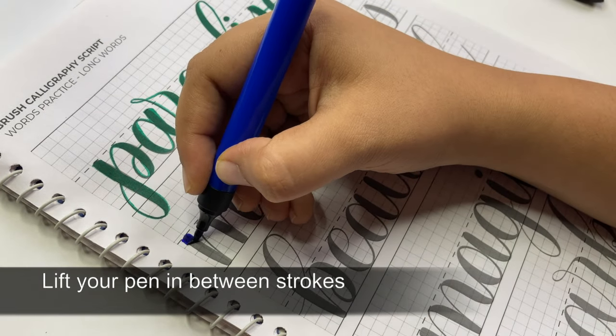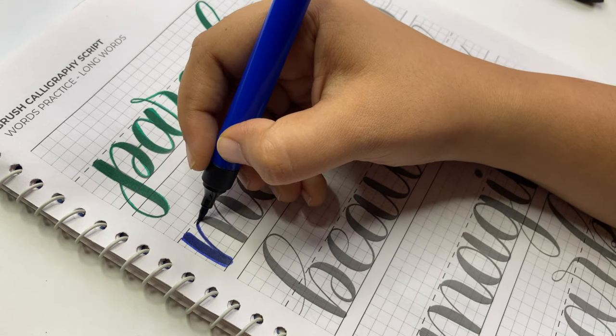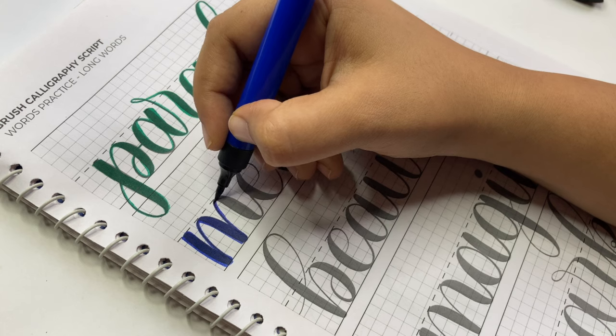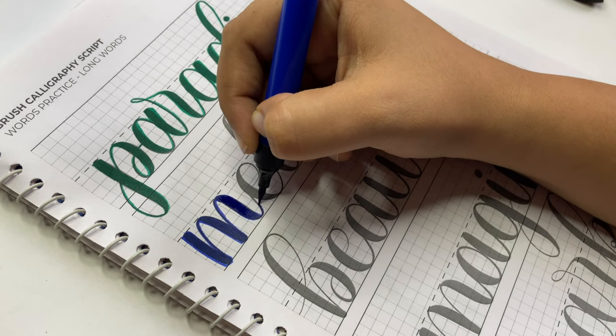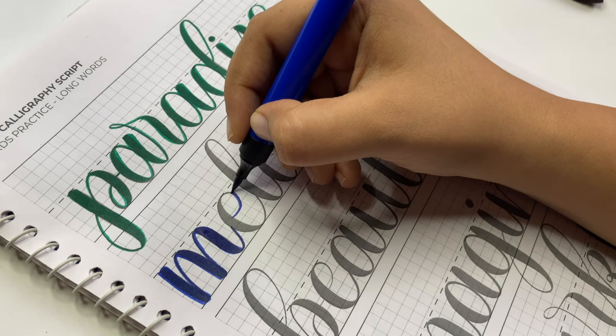Number 2. Lift your pen in between strokes. There is no feat in writing continuously. Additionally, calligraphy is not handwriting where you need to write fast without lifting the pen. So, lift your pen off the paper as much as possible.